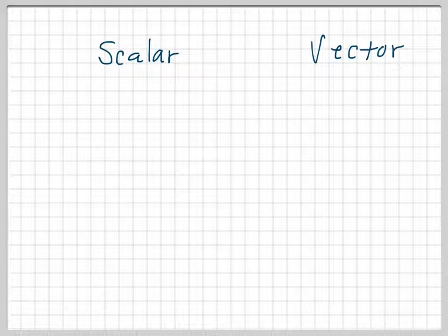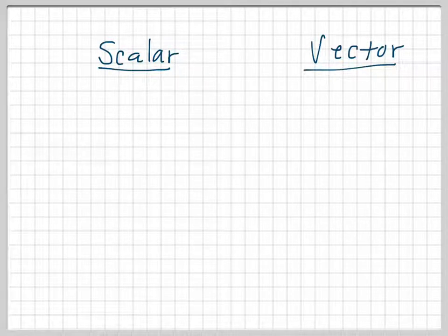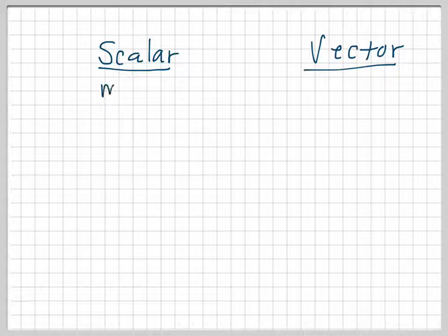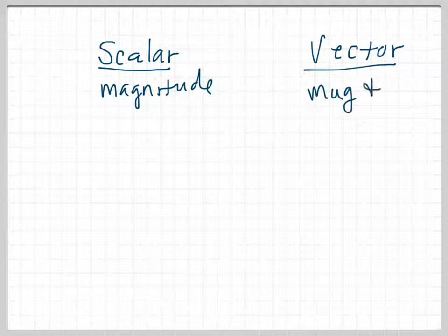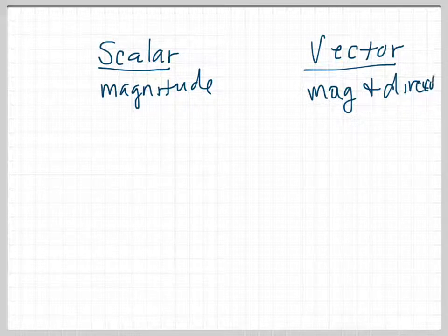First thing I want to talk about is the difference between scalar and vector quantities in physics. Every time we talk about some new quantity, we're going to talk about whether it's vector or whether it's scalar. The difference is: scalar is just a magnitude of something, but a vector is a magnitude and a direction. So anytime you have to put a direction on something, it's going to be a vector quantity.